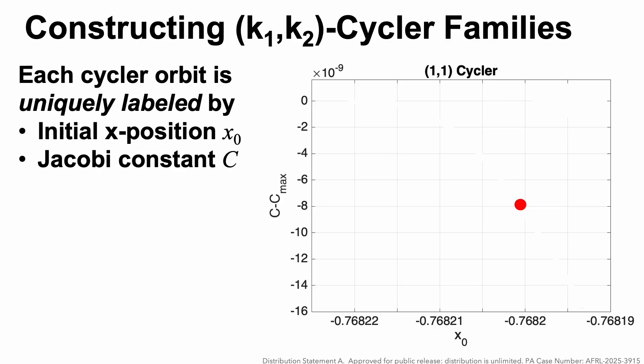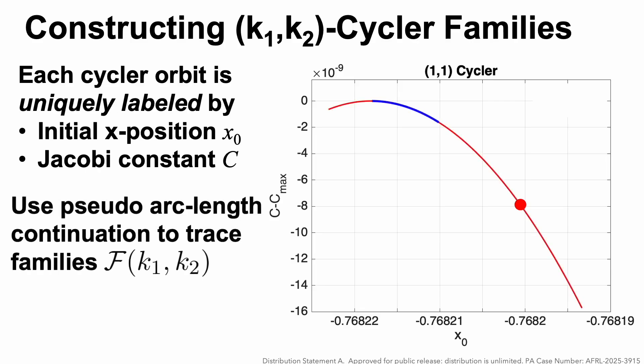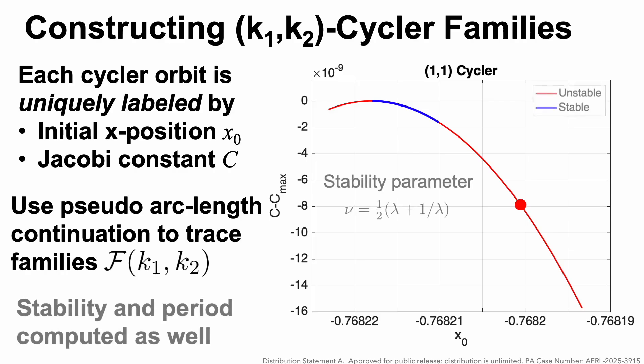Since this is a Hamiltonian system, periodic orbits occur in families. We can use pseudo arc length continuation to trace out the family. We can also calculate the stability parameter and the period, and we find that there are some subsets of the family of cyclers that are stable.